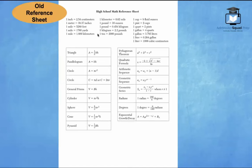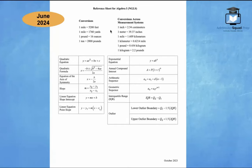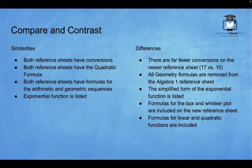So on the top notice there were conversions before and they will continue to be conversions on the new reference sheet. So let's go over some similarities and differences that I noticed between the old Algebra 1 reference sheet and the new Algebra 1 reference sheet. One thing I noticed is that both reference sheets have conversions listed at the top. So that's going to be an important component to take note of. Also both reference sheets have the quadratic formula listed. I also noticed that both reference sheets have formulas for arithmetic and geometric sequences. And finally the exponential function formula is also listed on both reference sheets.